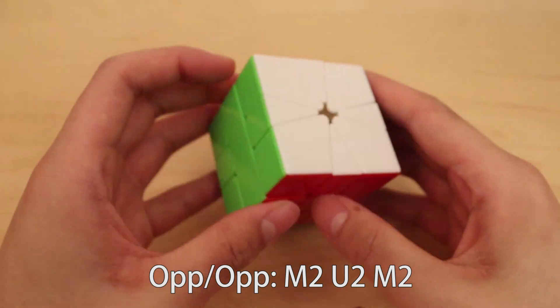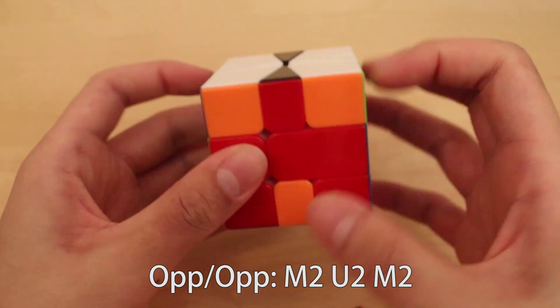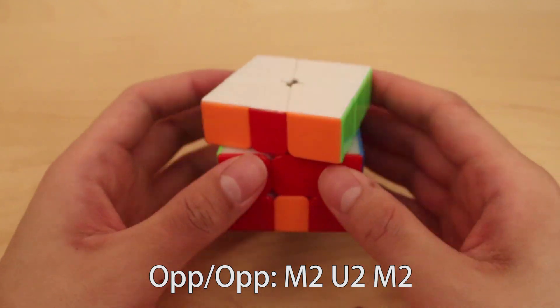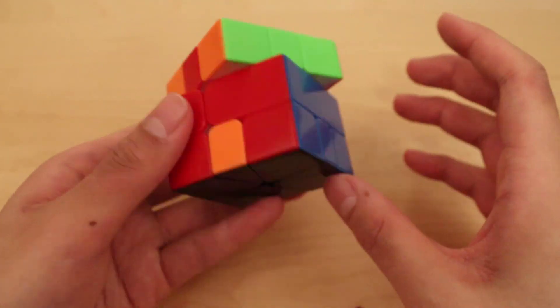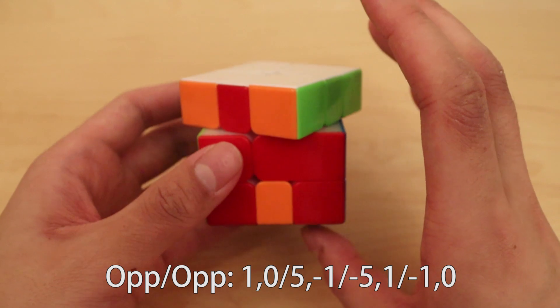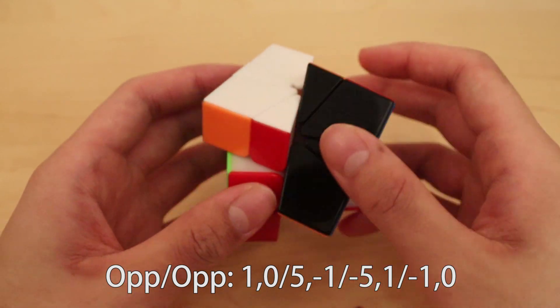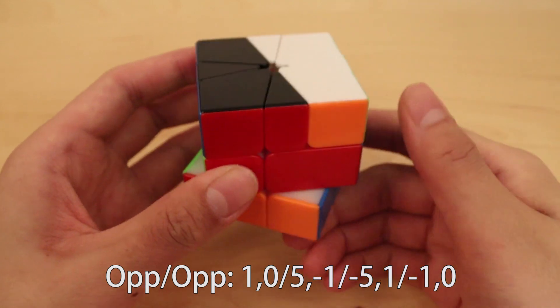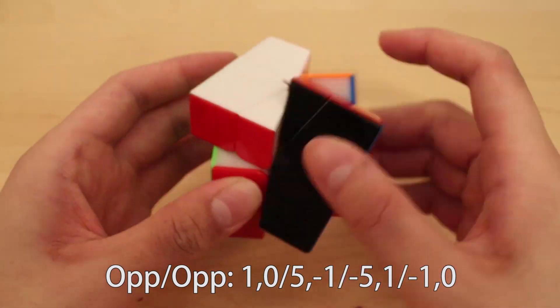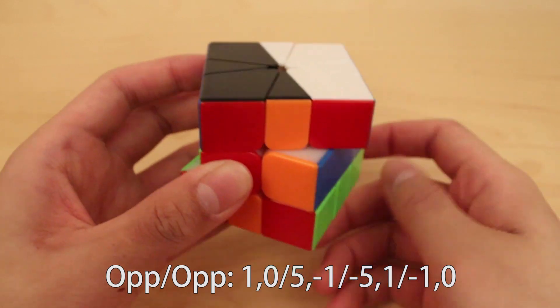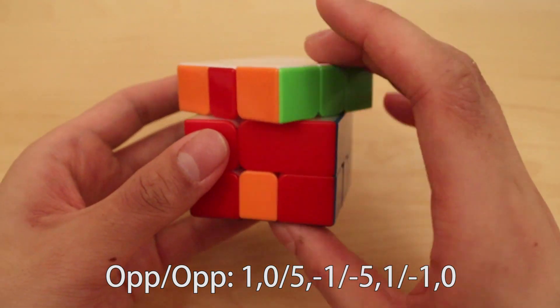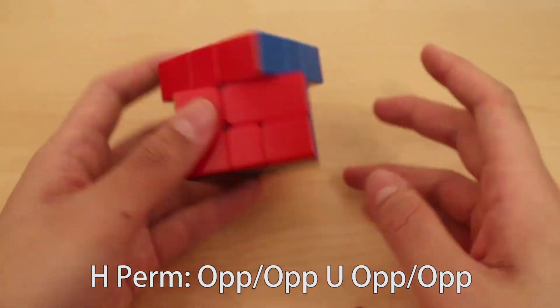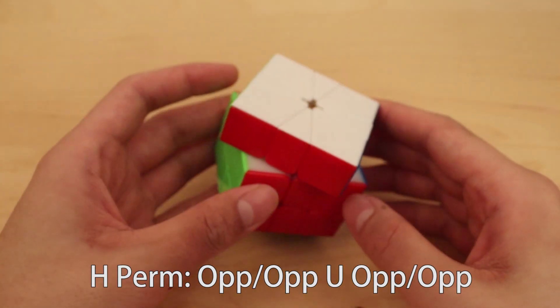You can also do opposite swaps with M2. So M2, U2, M2. That's op-op. And another way you can do this is the three slicer, which is not really an algorithm but it's quite easy to remember. You do 5, negative 1, negative 5, 1. For that op-op alg, you just learn the optimal H-perm as well.